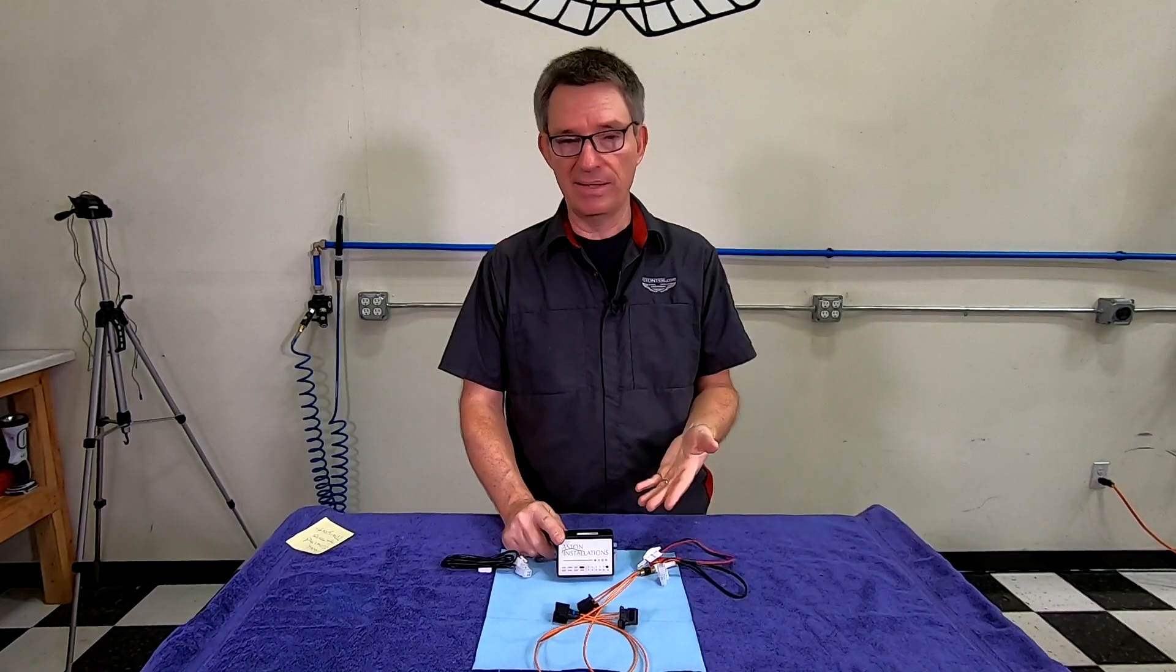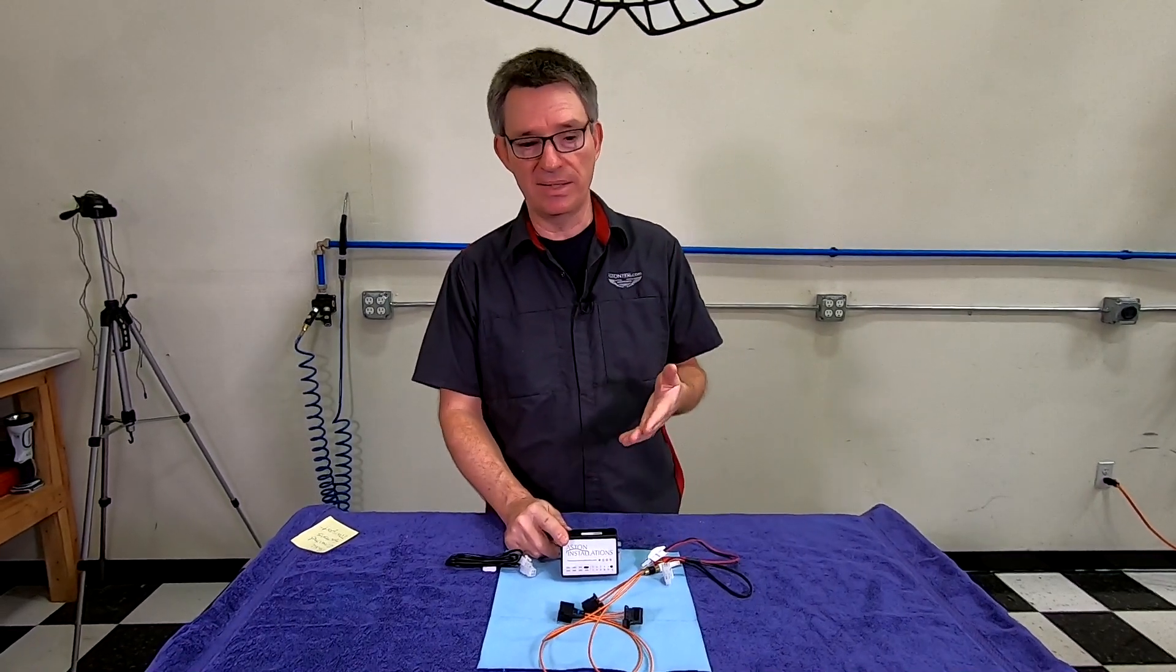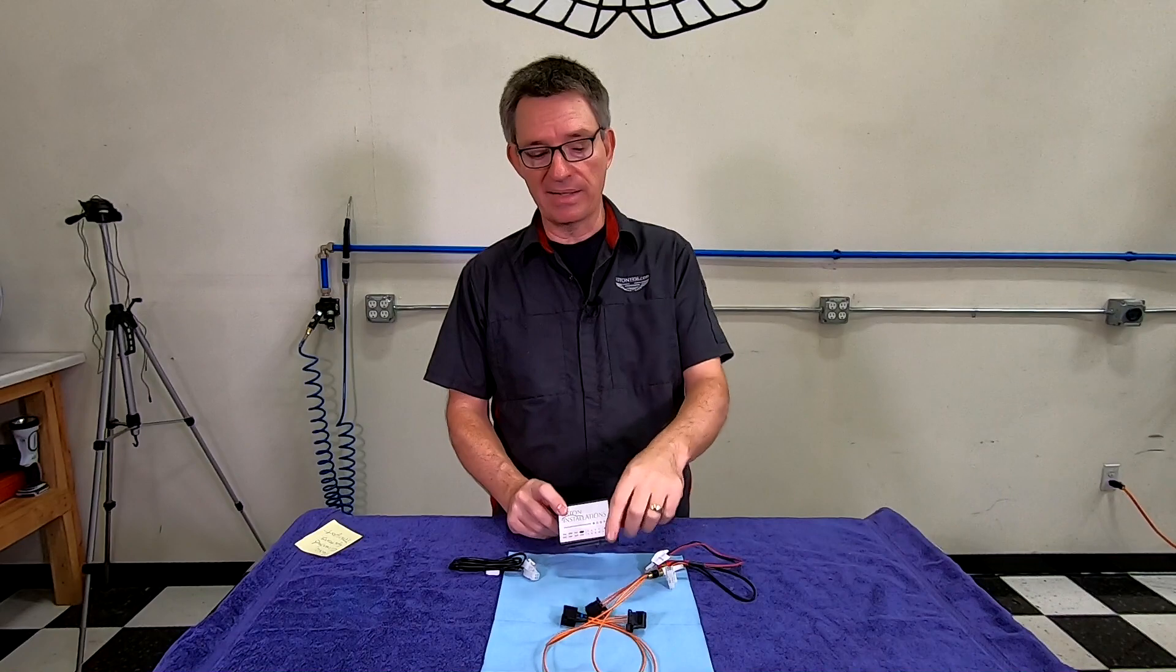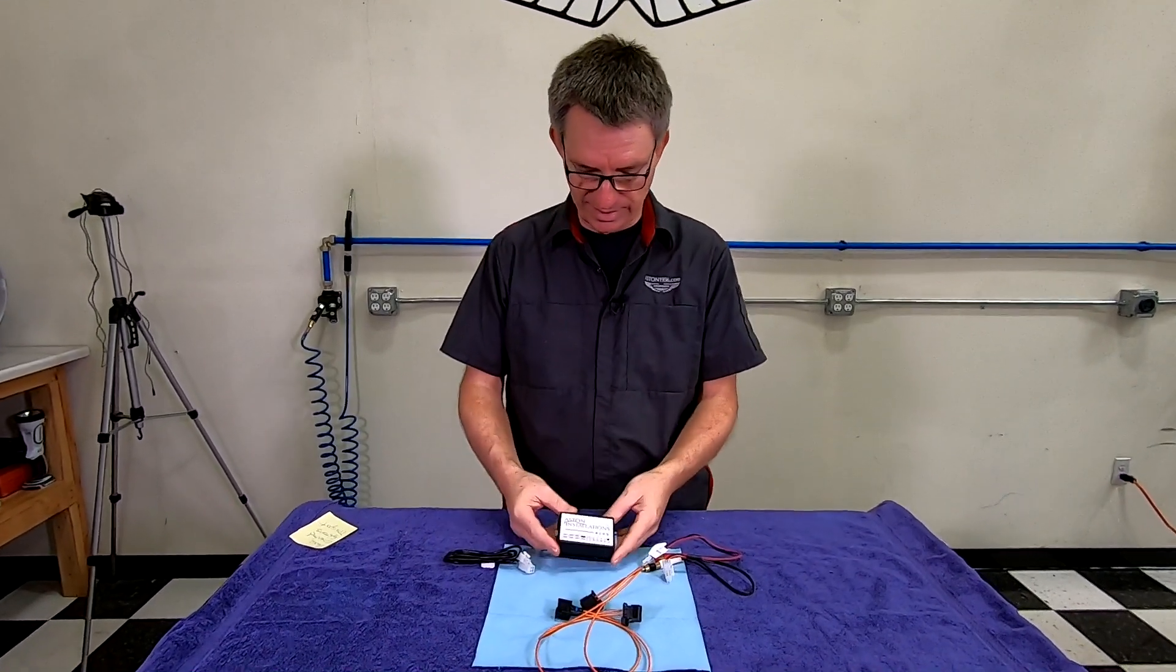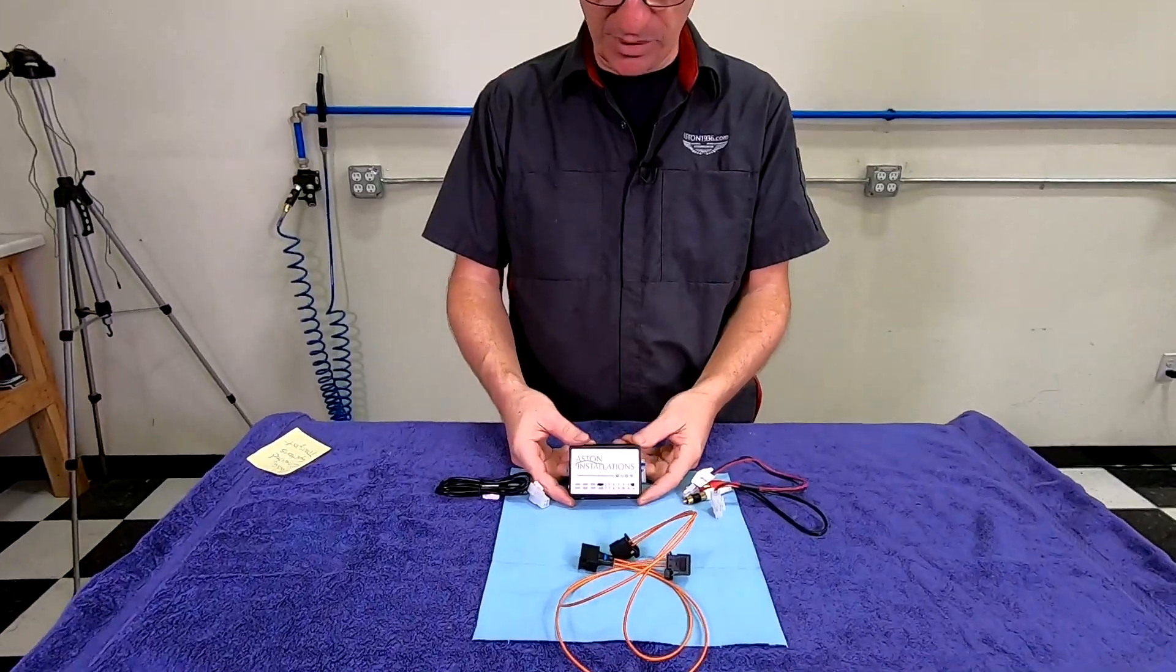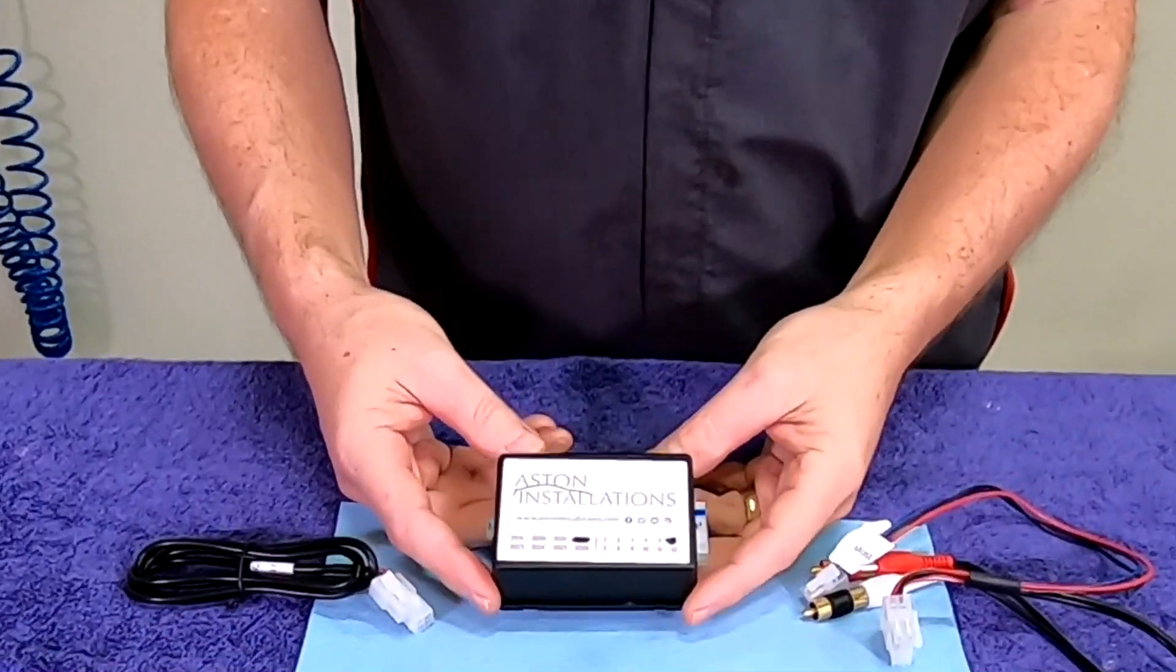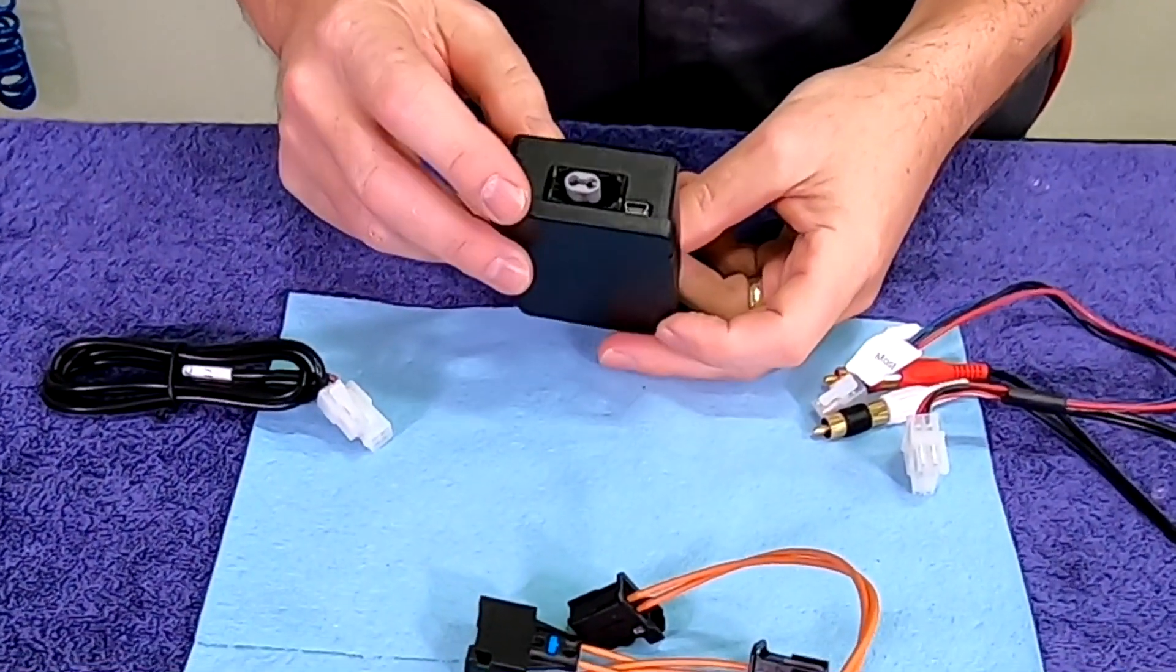So to add our Aston Installations HD system into the car, we have to add a device onto the MOST network. So here is their device. This is called the MOST interface, and basically it has two things on it.